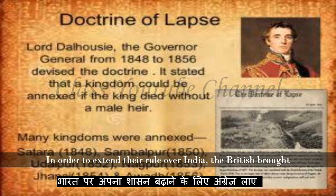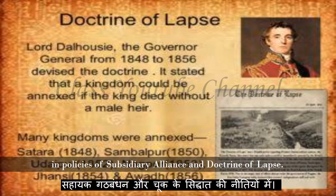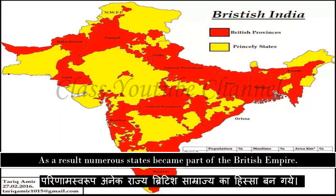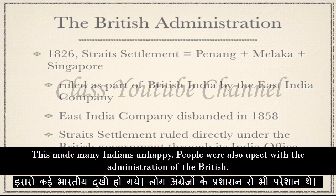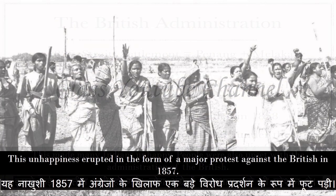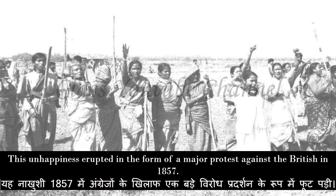In order to extend their rule over India, the British brought in policies of subsidiary alliance and doctrine of lapse. As a result, numerous states became part of the British Empire. This made many Indians unhappy. People were also upset with the administration of the British. This unhappiness erupted in the form of a major protest against the British in 1857.